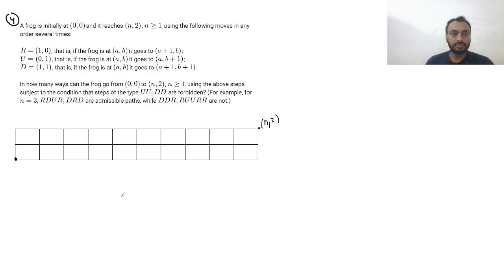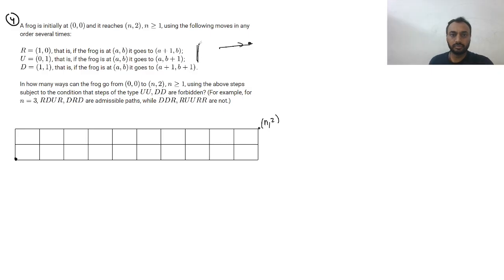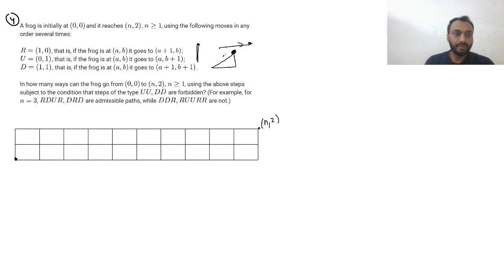We have three moves: R, U, and D. The R move shifts the frog one unit to the right. The U move shifts the frog vertically one unit up. The D move shifts the frog one unit right and one unit up. We have to find the number of ways to go from (0, 0) to (n, 2) using these steps.